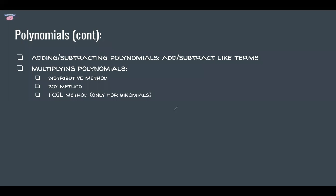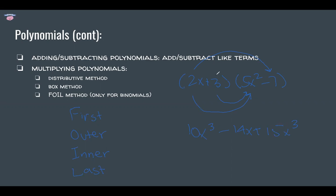The FOIL method is only for binomials, and luckily the two polynomials we multiplied earlier were binomials. FOIL stands for First, Outer, Inner, Last. First: multiply the first terms — you get 10x cubed. Outer: multiply the outer terms — minus 14x. Inner: multiply the inner terms — plus 15x squared. Last: multiply the last terms — minus 21. Rearranging gives the same polynomial as before. (Note: the inner result is 15x squared, not x cubed.)